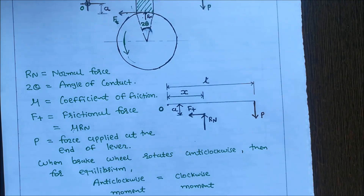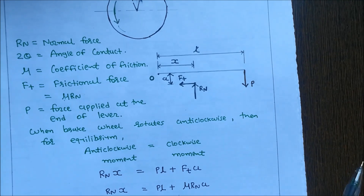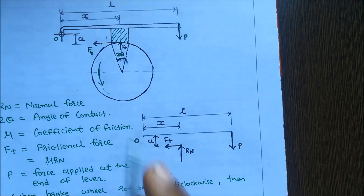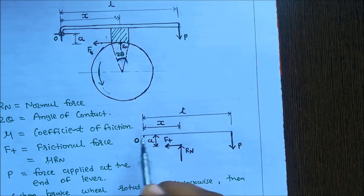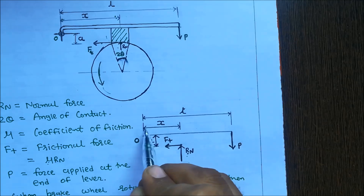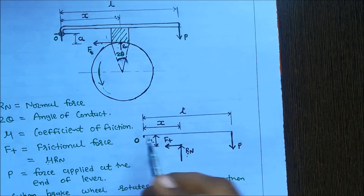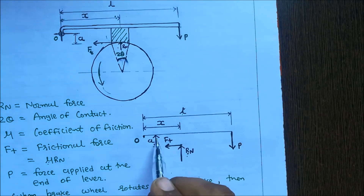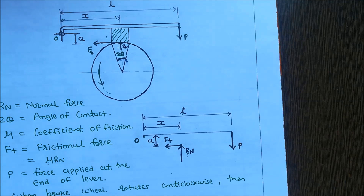When the brake wheel rotates in the anti-clockwise direction, for the equilibrium condition, anti-clockwise moment equals clockwise moment. Here I draw a free body diagram: O is the fulcrum, Rn is the normal reaction, X is the distance between the fulcrum and normal reaction, L is the distance between the fulcrum and the applied effort, and A is the distance between the tangential force and the fulcrum.